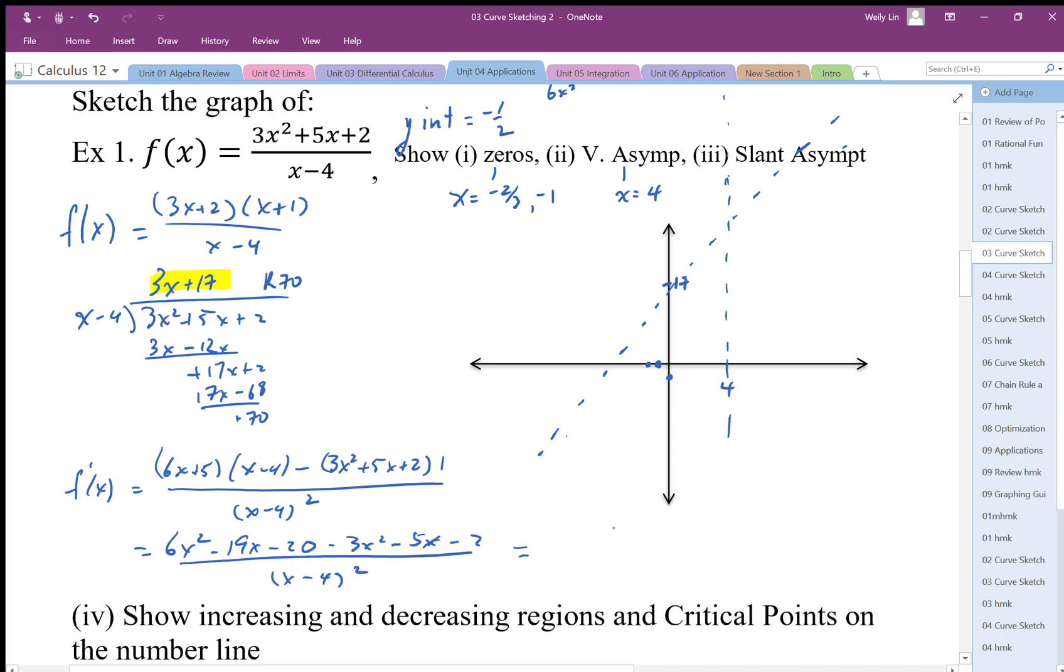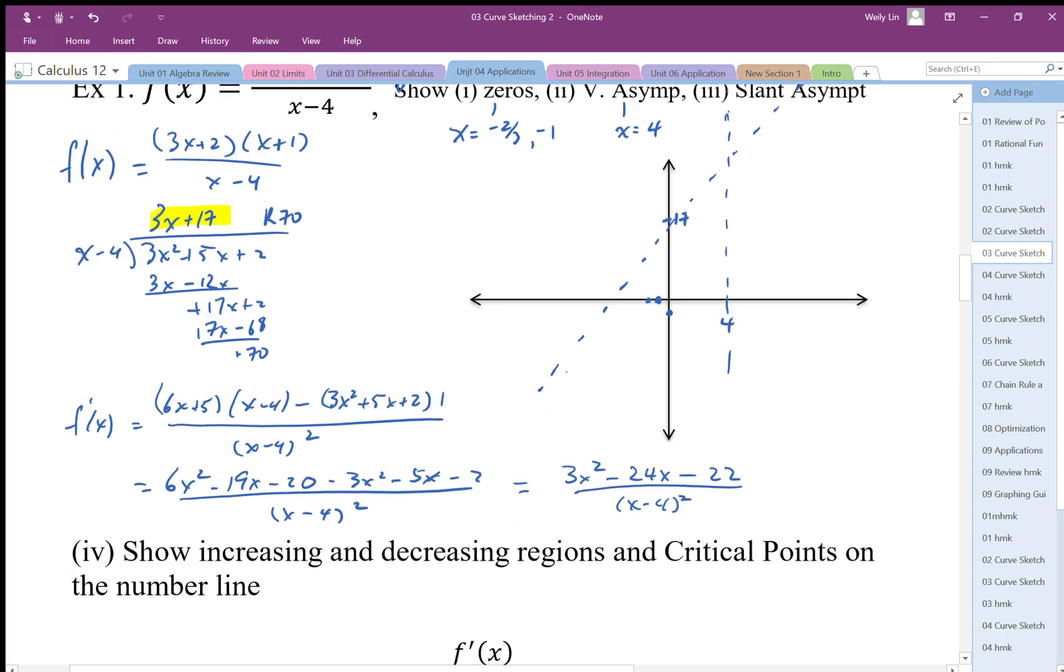When I multiply that all out and simplify, I'm going to end up with 3x squared minus 22x minus 22. Just double checking my math here. So I get negative 24x plus 5 is minus 19. Here I'm going to get 24x, so it's going to be negative 24x, all over (x minus 4) squared. So there's my derivative.